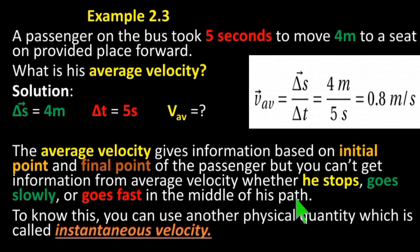But you can't get information from average velocity whether he stops, goes slowly, or goes fast in the middle of his path. To know this you can use another physical quantity which is called instantaneous velocity.